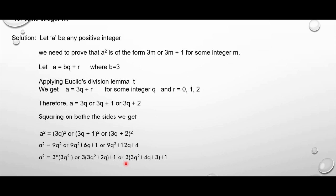For 9q² plus 12q plus 4, we have 3 as a common term in 9q² plus 12q. Taking 3 out, inside the bracket we get 3q² plus 4q, and splitting 4 as 3 plus 1, we take 3 inside and keep plus 1 outside. Now we can write 3q² as m1, (3q² plus 2q) as m2, and (3q² plus 4q plus 3) as m3, where m1, m2, m3 are integers. Therefore a squared equals 3m1, or 3m2 plus 1, or 3m3 plus 1. Thus the square of any positive integer is either of the form 3m or 3m plus 1.